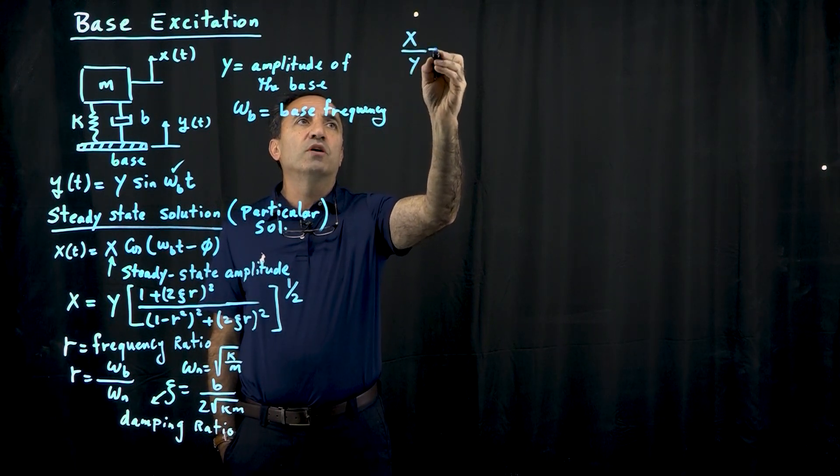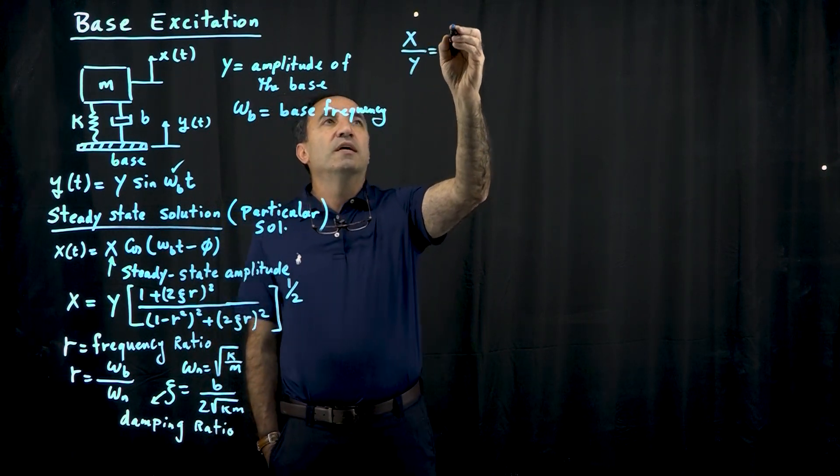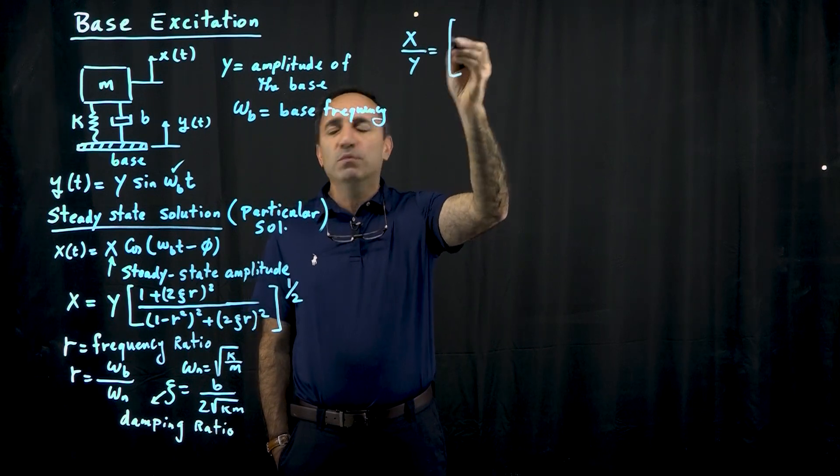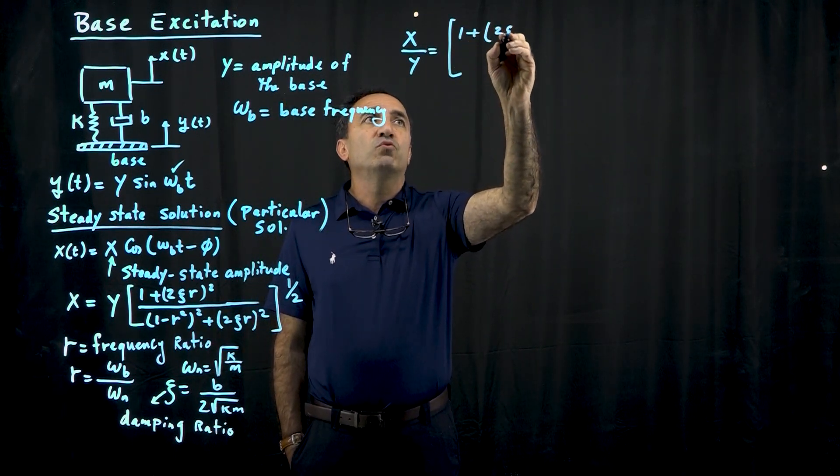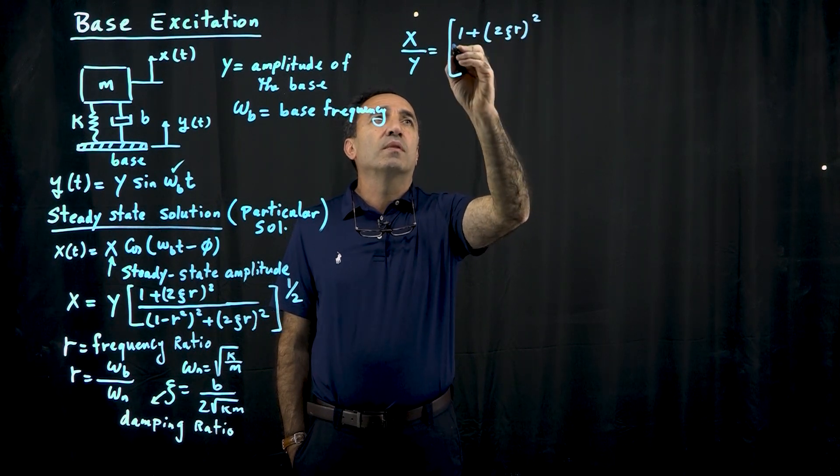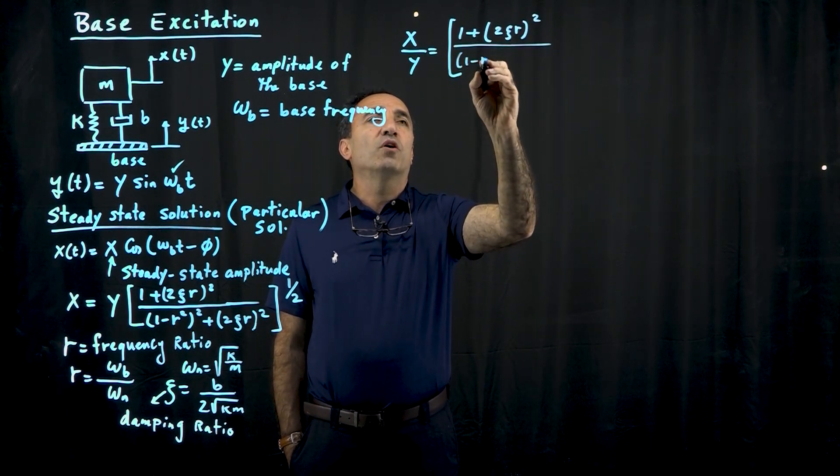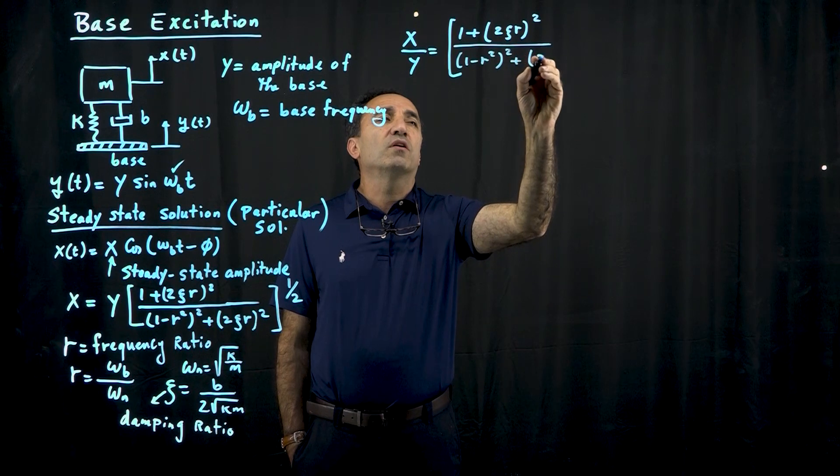so in other words, take the y and put it under the x, and this equation basically becomes pretty much the same thing, the right hand side is the same, 1 plus 2 zeta r is squared, divided by 1 minus r squared squared, plus 2 zeta r squared.